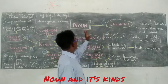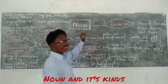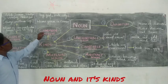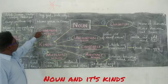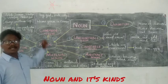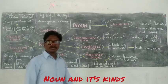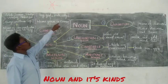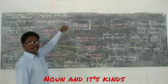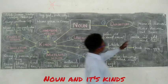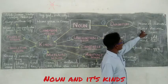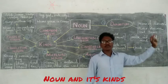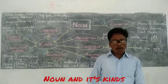Now we shall see what are the kinds of noun. First: Common Noun. What is a common noun? It is a name given in common to any person, place, animal or a thing. It is called common noun.